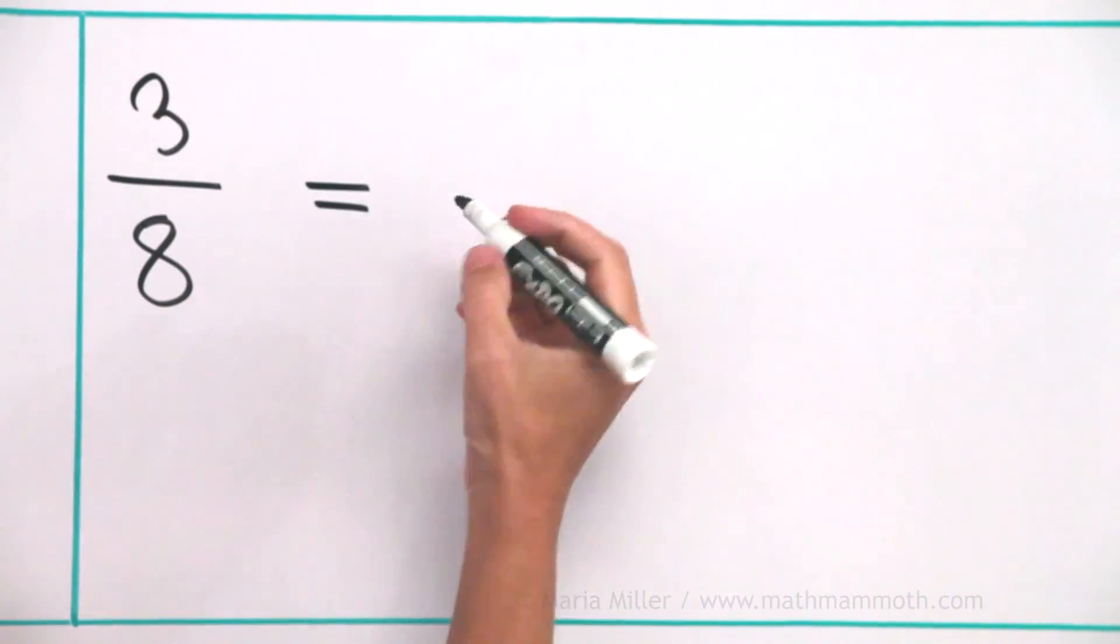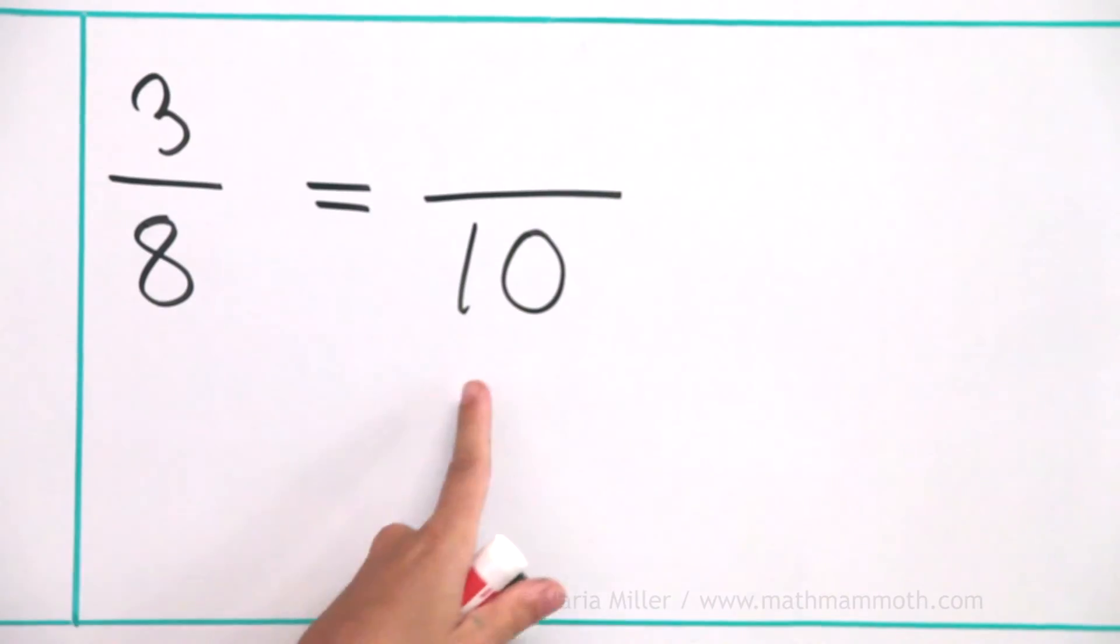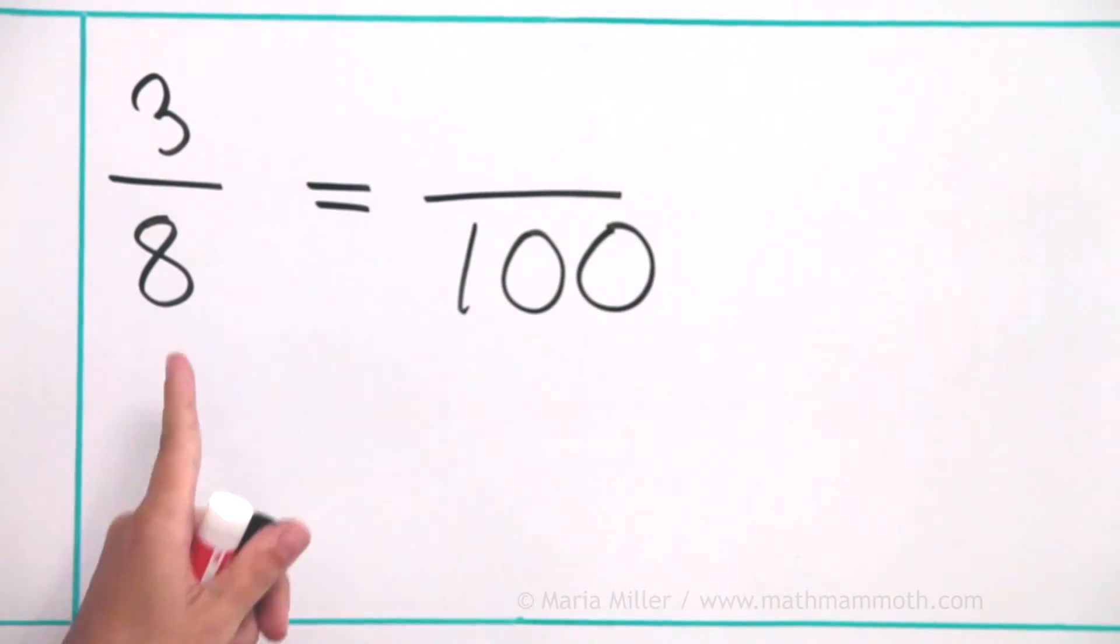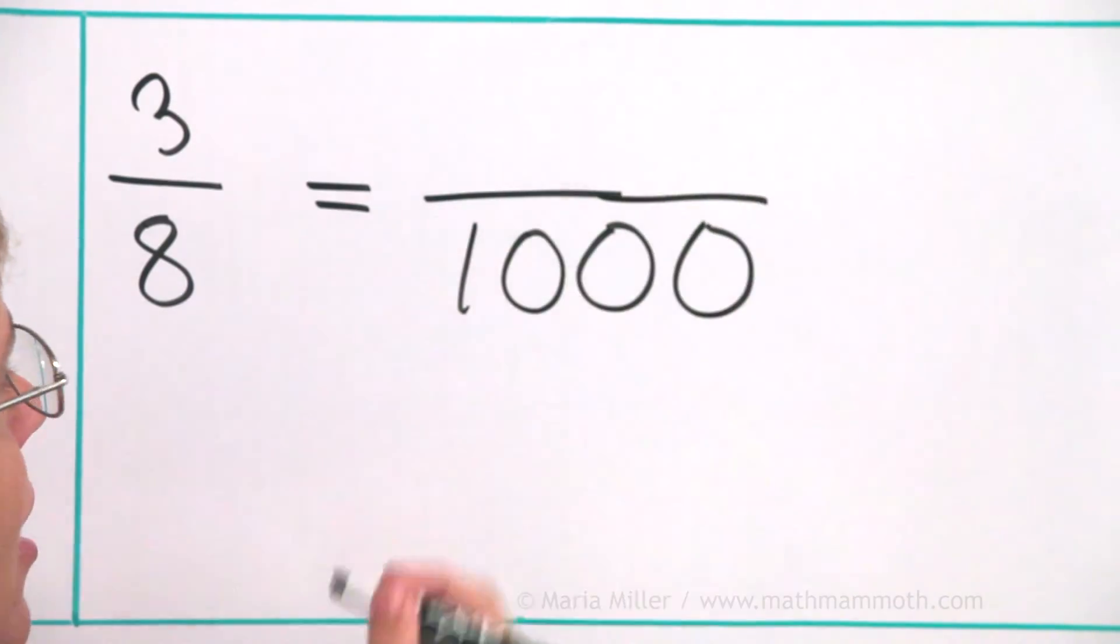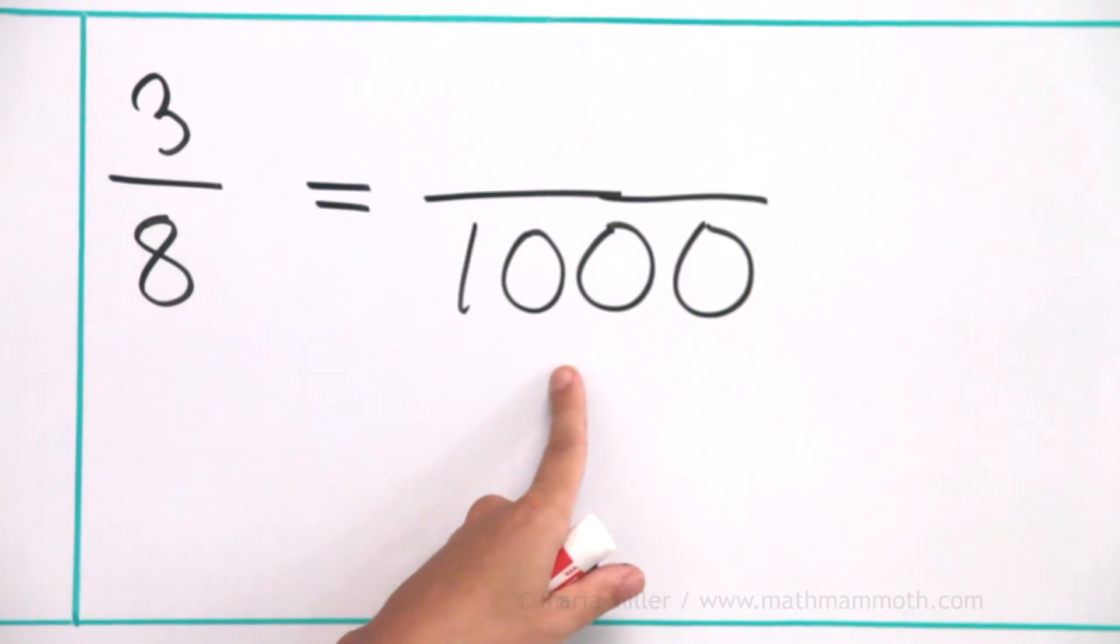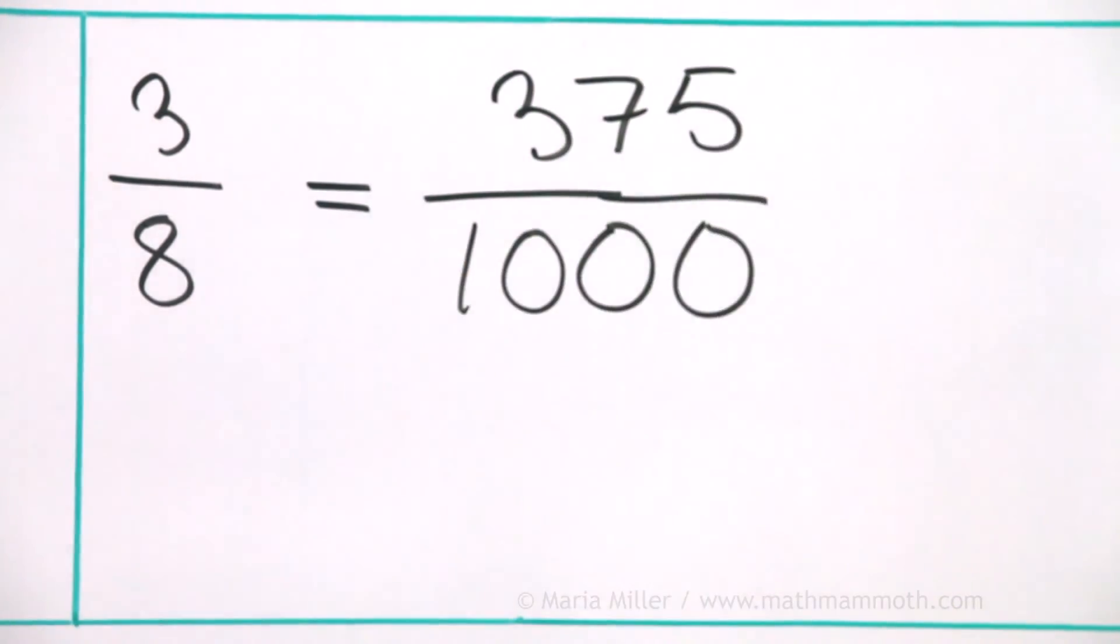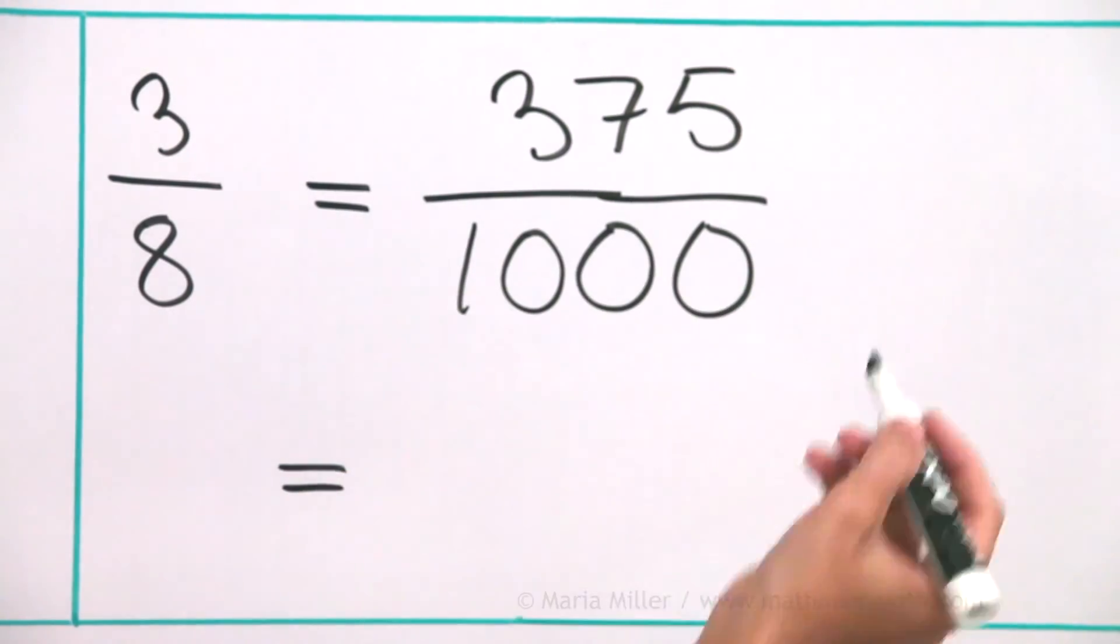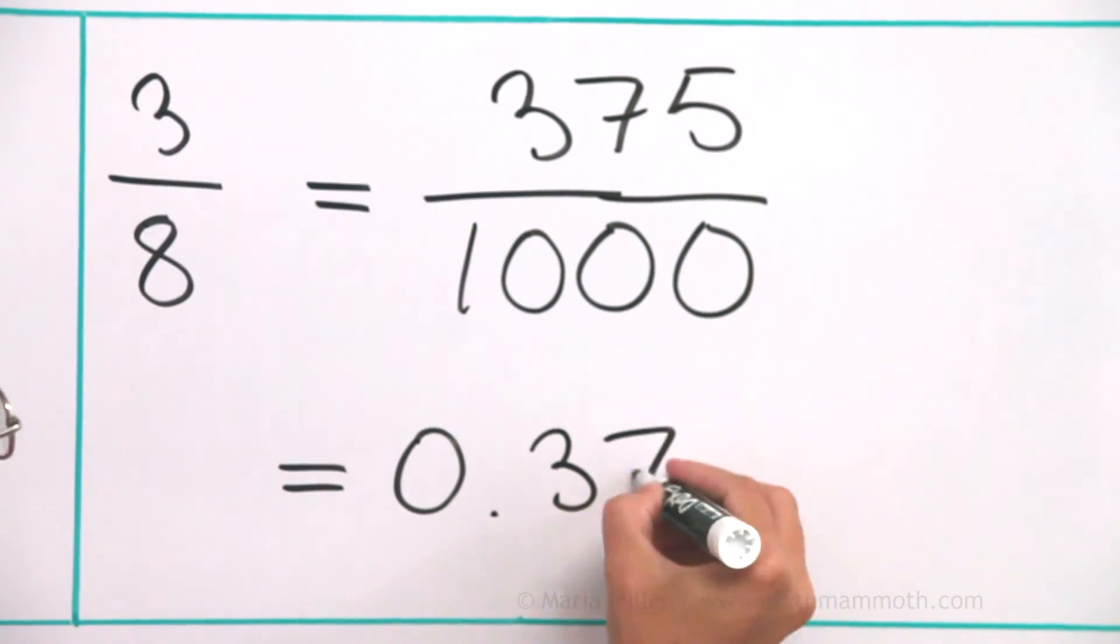8 does not go evenly into 100, but 8 times 125 equals 1,000. So I go 3 times 125, that's 375. And now that is, of course, 375 thousandths. We can write it as a decimal, 0.375.